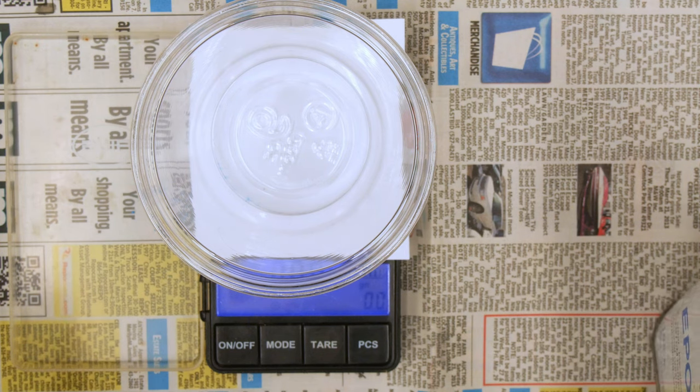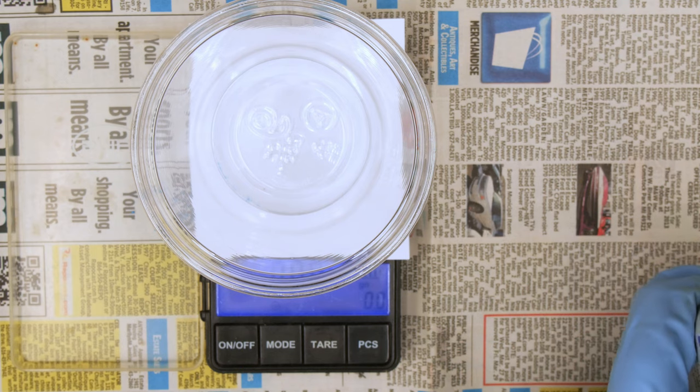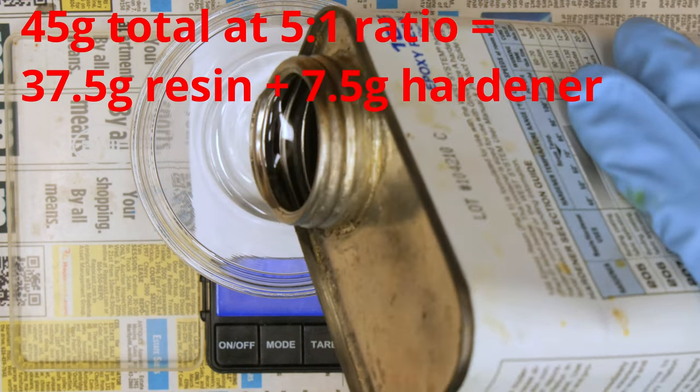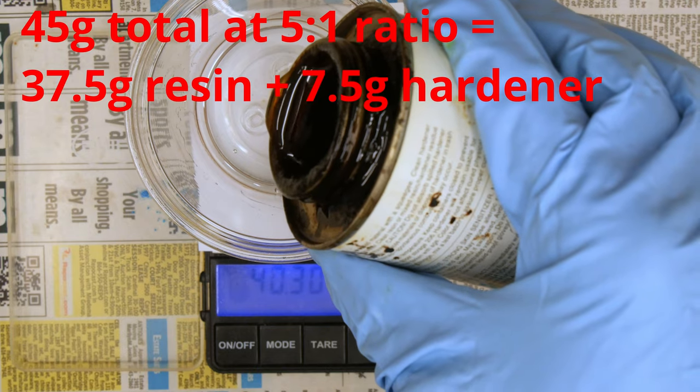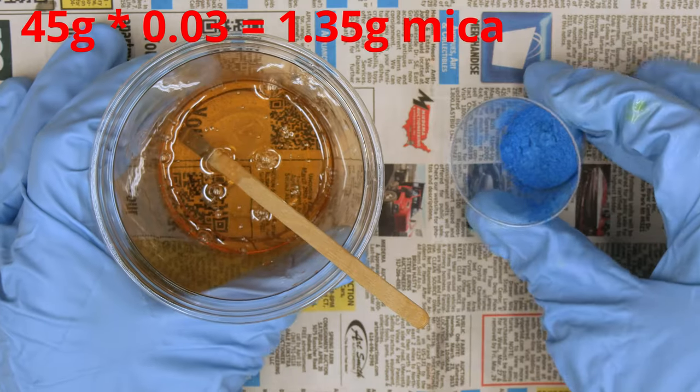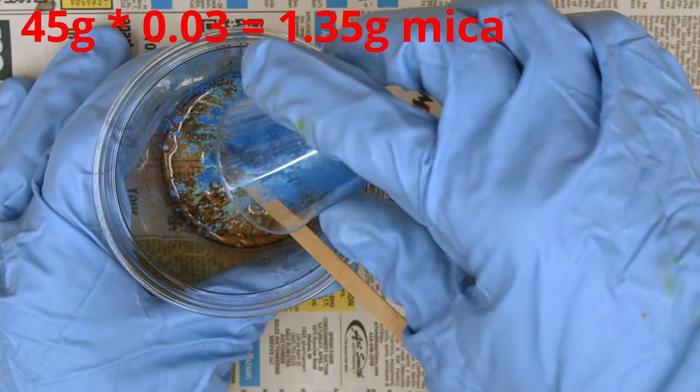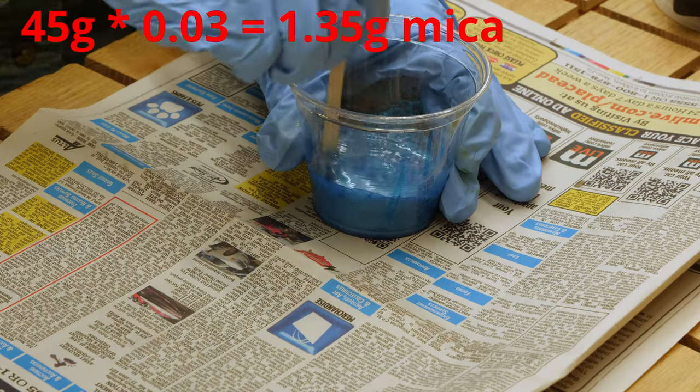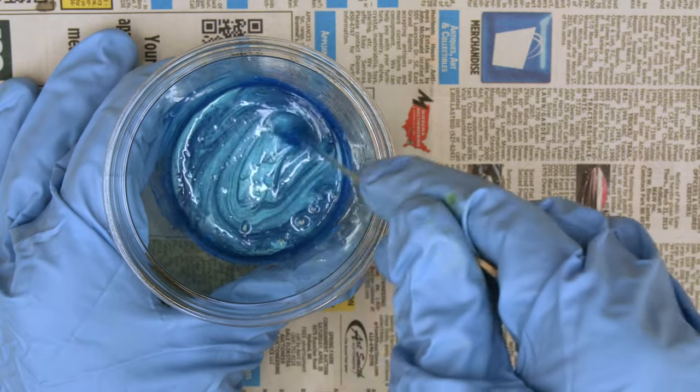My first batch of epoxy I made a total of 42 grams but this time I'm going to make just a little more so I'm going to go up to 45 grams and to maintain the same ratio I need 37.5 grams of resin, 7.5 grams of hardener to bring it up to 45 gram total. So I have 1.35 grams of this turquoise mica powder weighed out and now I'll add it to the epoxy and mix it in. Okay that looks pretty good it's ready to pour.